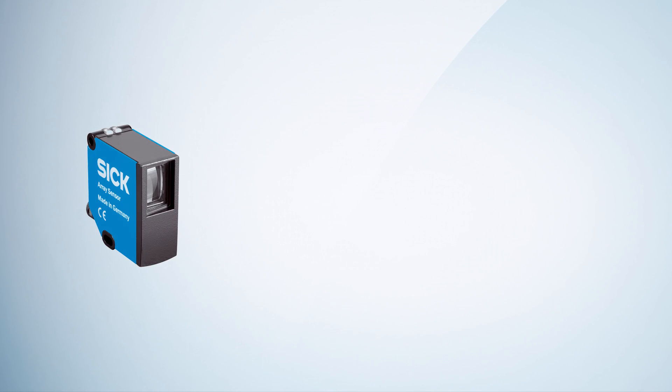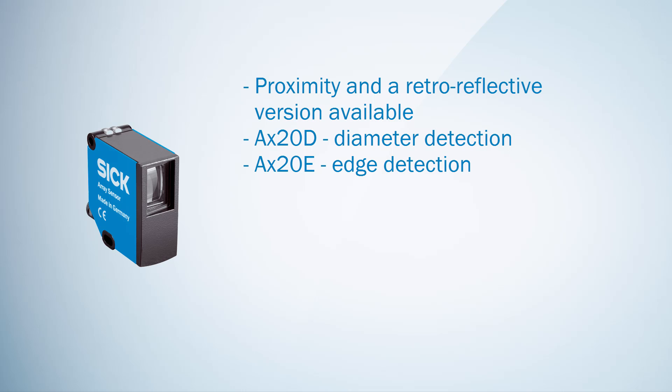The array sensor is available in different versions. In general, there is a proximity and a retroreflective version available as a diameter or an edge detection version. The sensing range is either 25 or 100 mm.